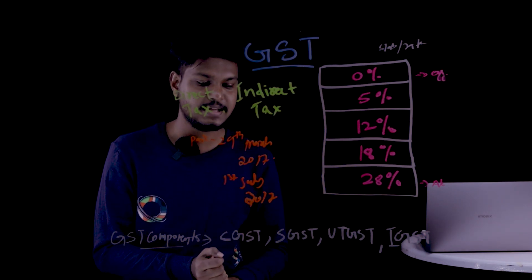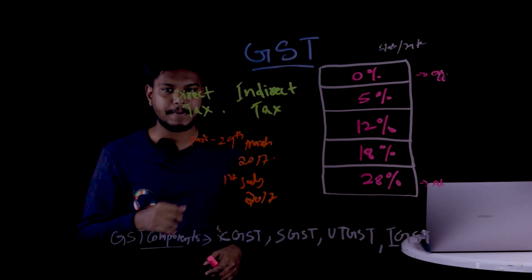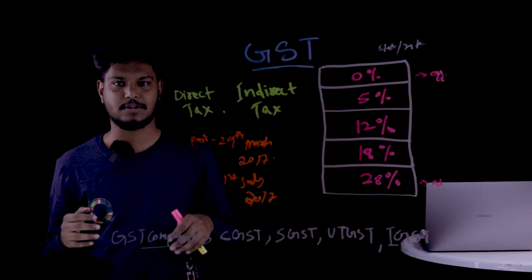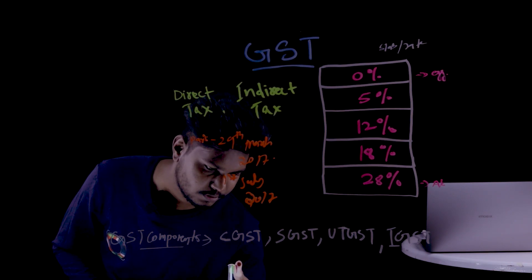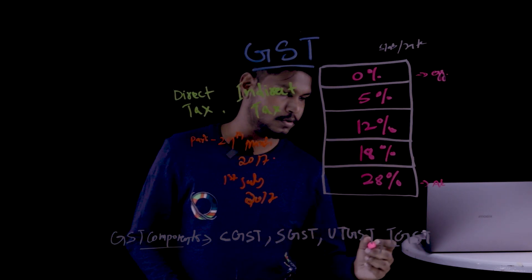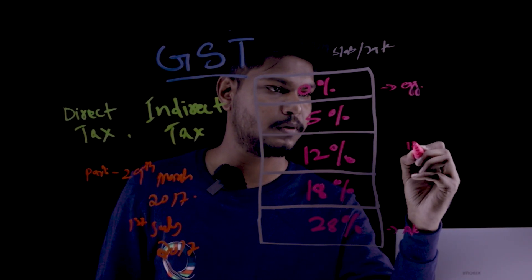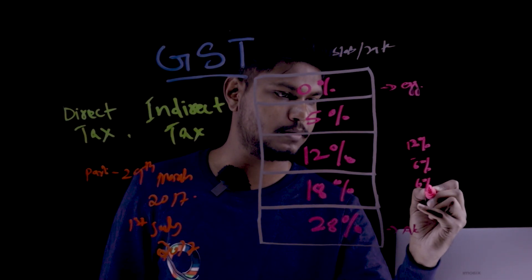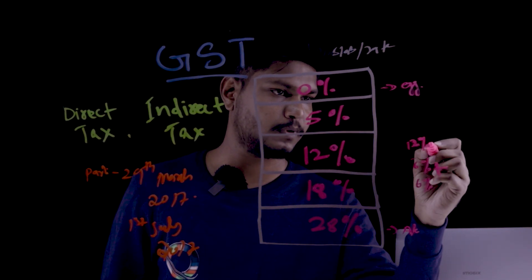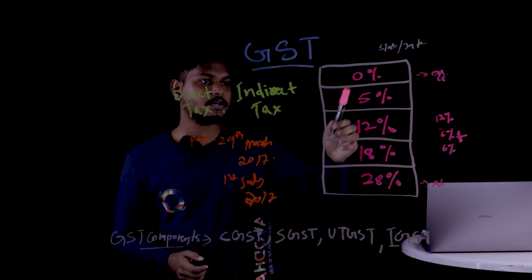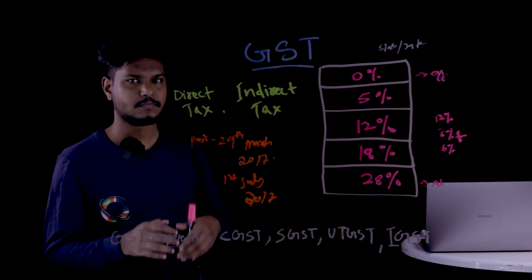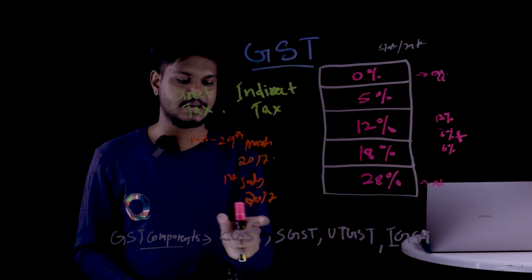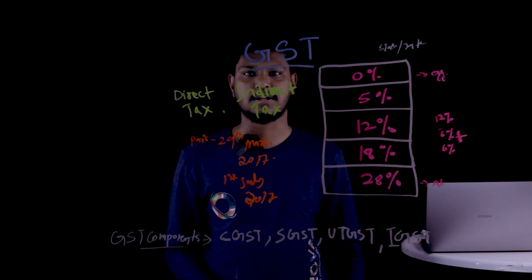For intra-state transactions, CGST and SGST apply. For example, if a product attracts 12% GST, it is split as 6% Central GST and 6% State GST, totaling 12%.